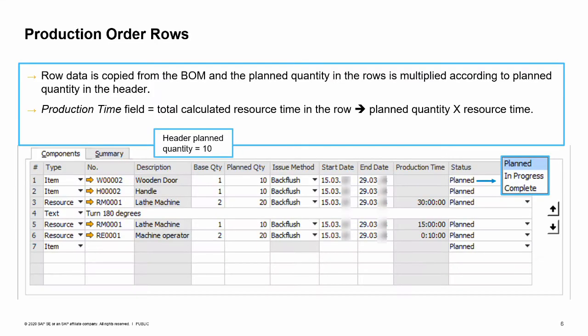You can see that row data was also copied to the production order, but changes can still be applied. Use the arrows on the right to define the correct sequence of the rows or change data in the rows. The production time field indicates the total calculated resource time in the row. The base quantity was copied from the BOM and the planned quantity was calculated according to the header planned quantity that the production manager entered. There is also a status at the row level. This status can be adjusted manually and is not affected by the status in the header — it is used for information only.